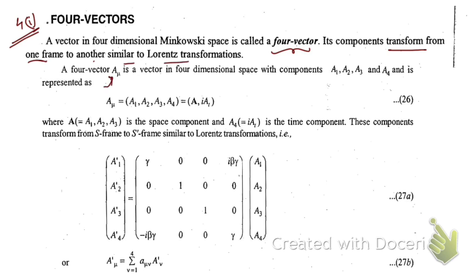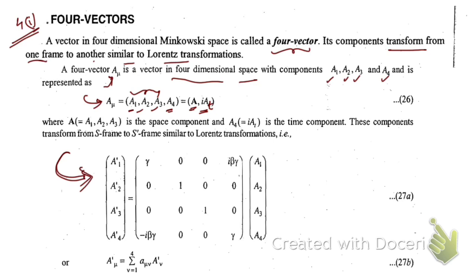If A-mu is a four-vector in four-dimensional space, it has components: A1, A2, A3 are the x, y, z components, and A4 is the time component, represented as i·a·t. The bold A represents the vector with three spatial components x, y, z. Using the Lorentz transformation, if the same vector A-mu is in one frame, for another frame it becomes A-mu dash, transferred via the Lorentz transformation.